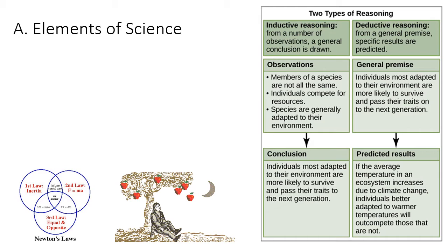So elements of science: first, we have to deal with observations. One of the fundamental things about observations is that the things we observe are things that are actually happening. When we see, hear, smell, perceive anything, or use instruments to measure things, we are making an assumption that what we're observing is real — something that's actually happening — and that the observations we make are consistent, based on natural and physical laws that have always been around and will continue to work the same way every single time.